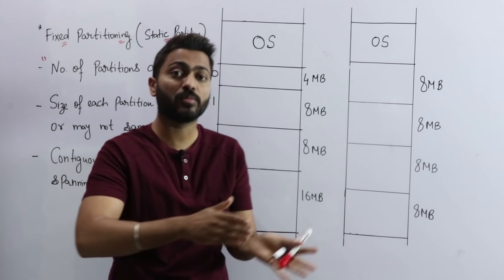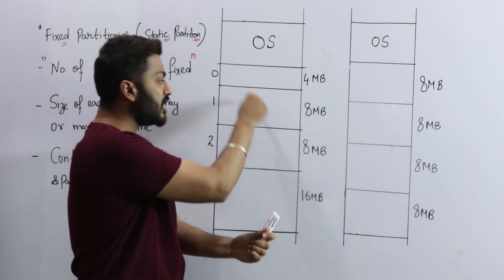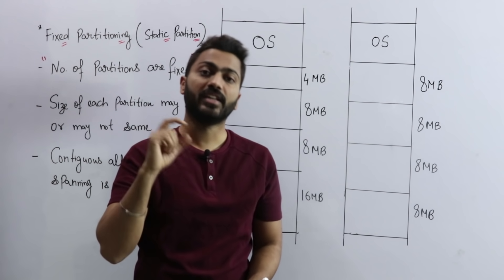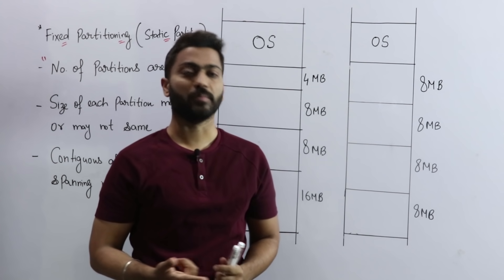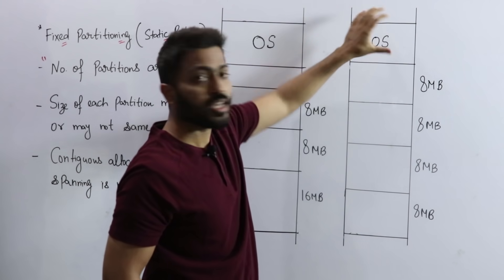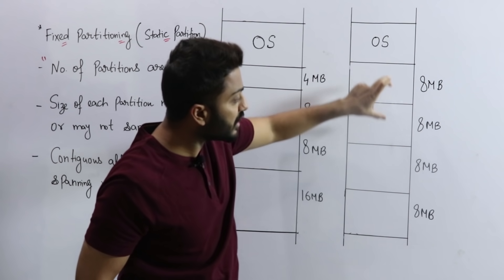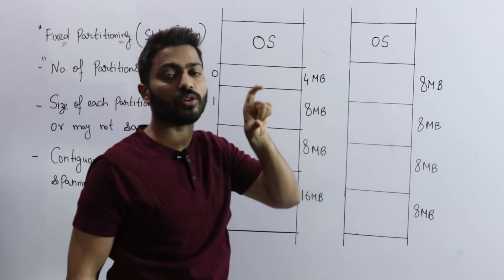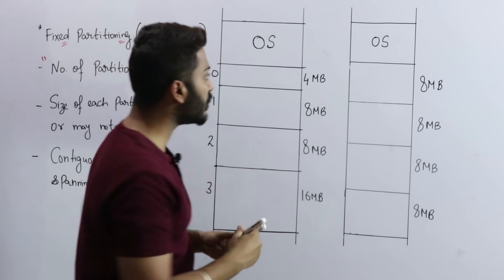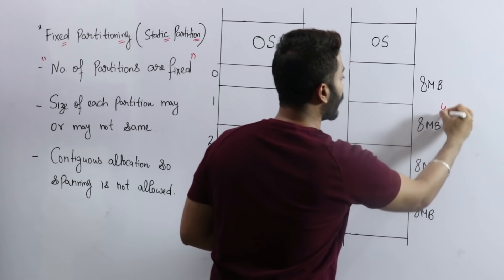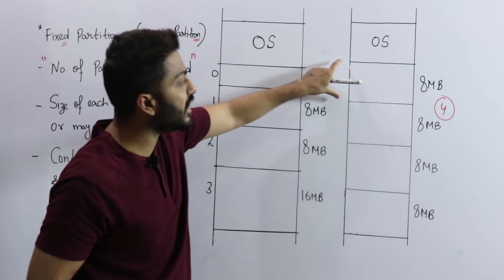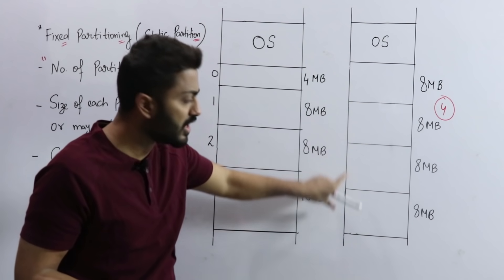When we configure the system, we decide the number of partitions and the size of each slot. In this example, how many partitions are there? The partitions are 4. And what is the size of each partition? Let's say 8MB — so we have 8MB, 8MB, 8MB, and 8MB.